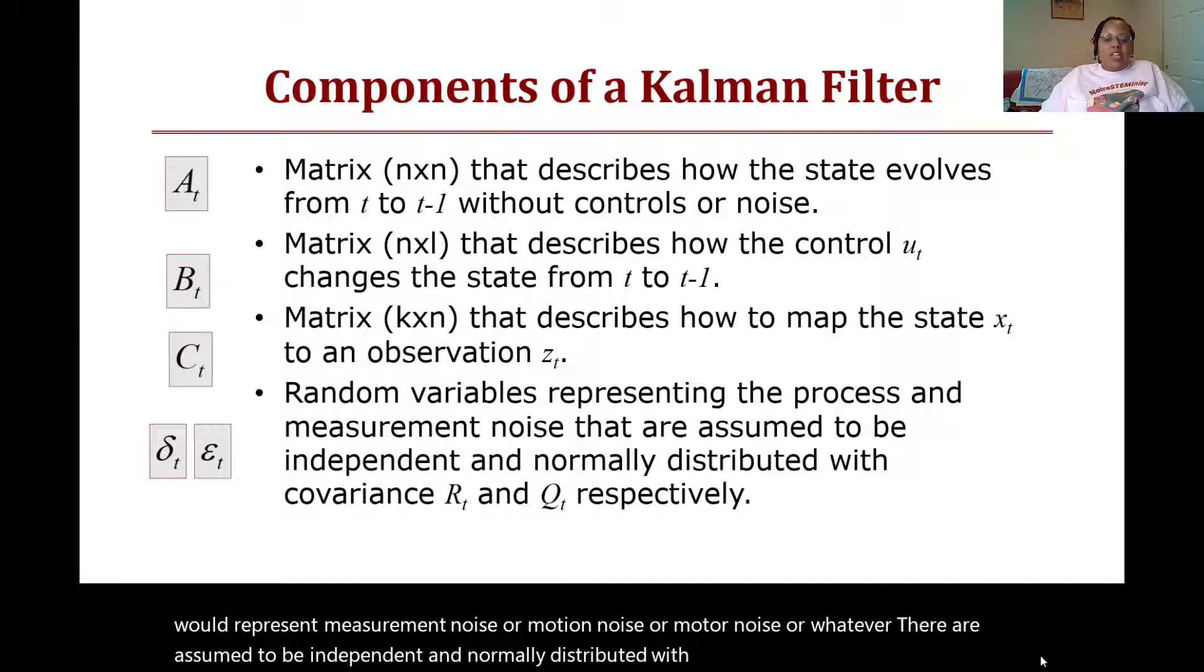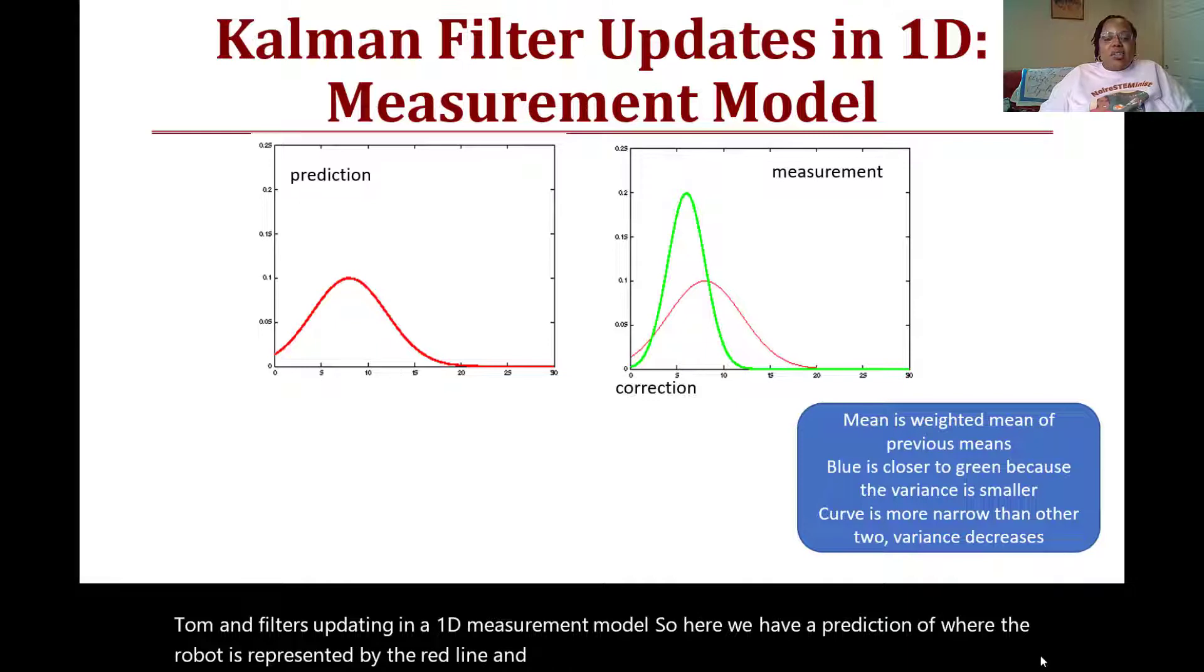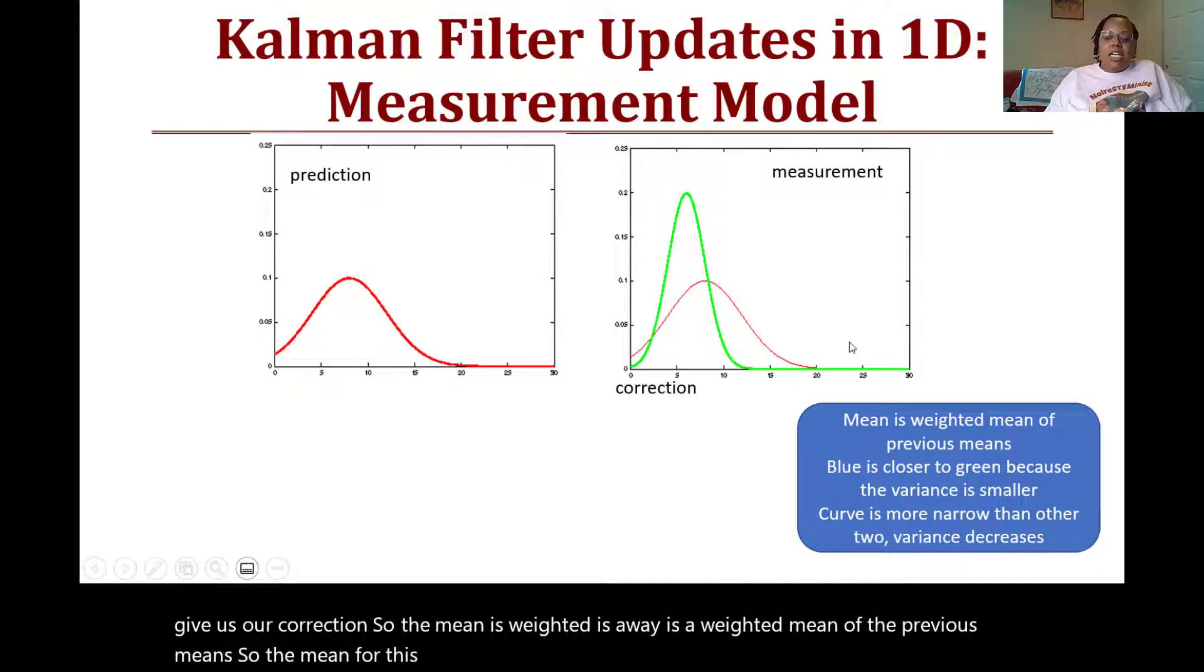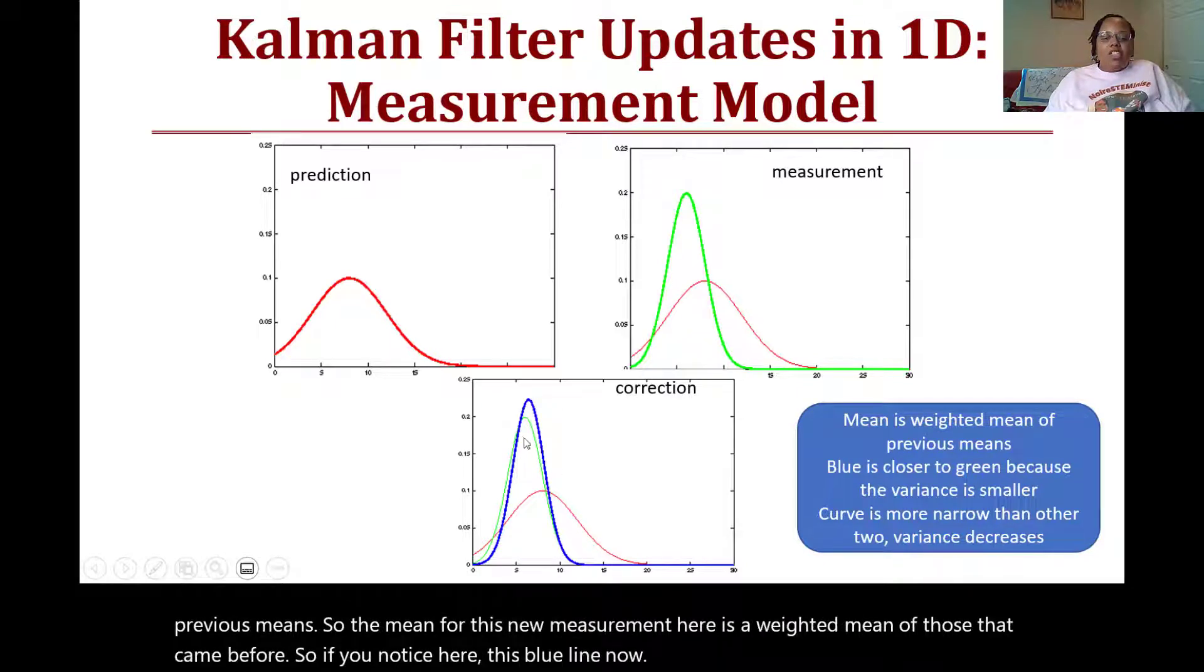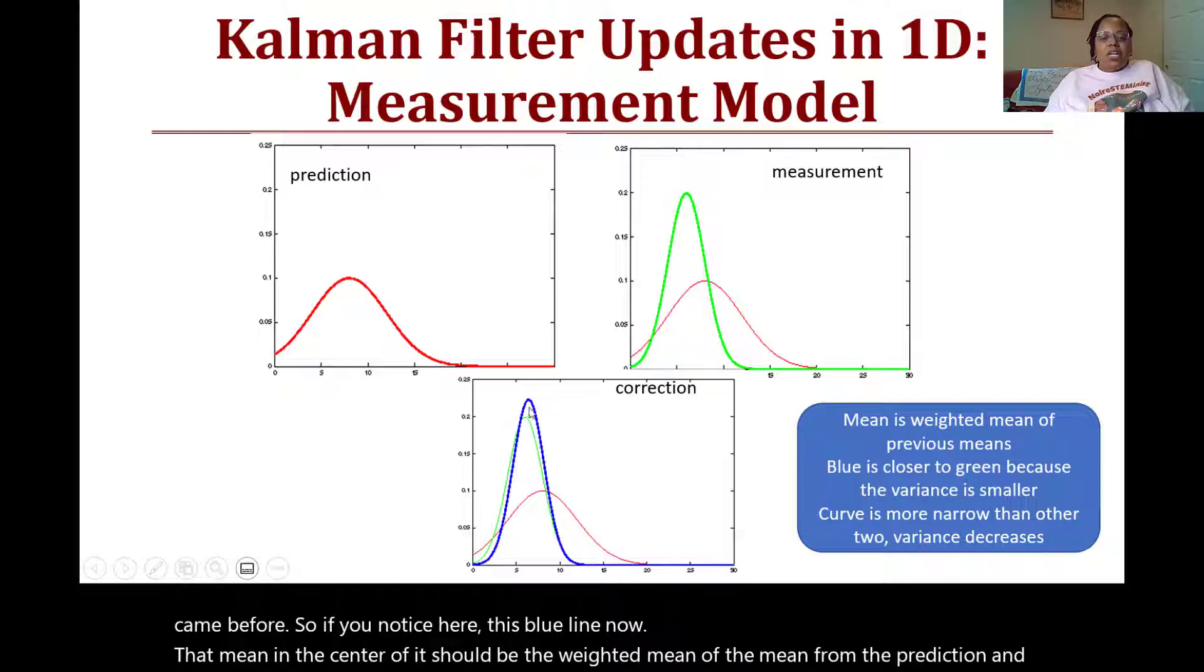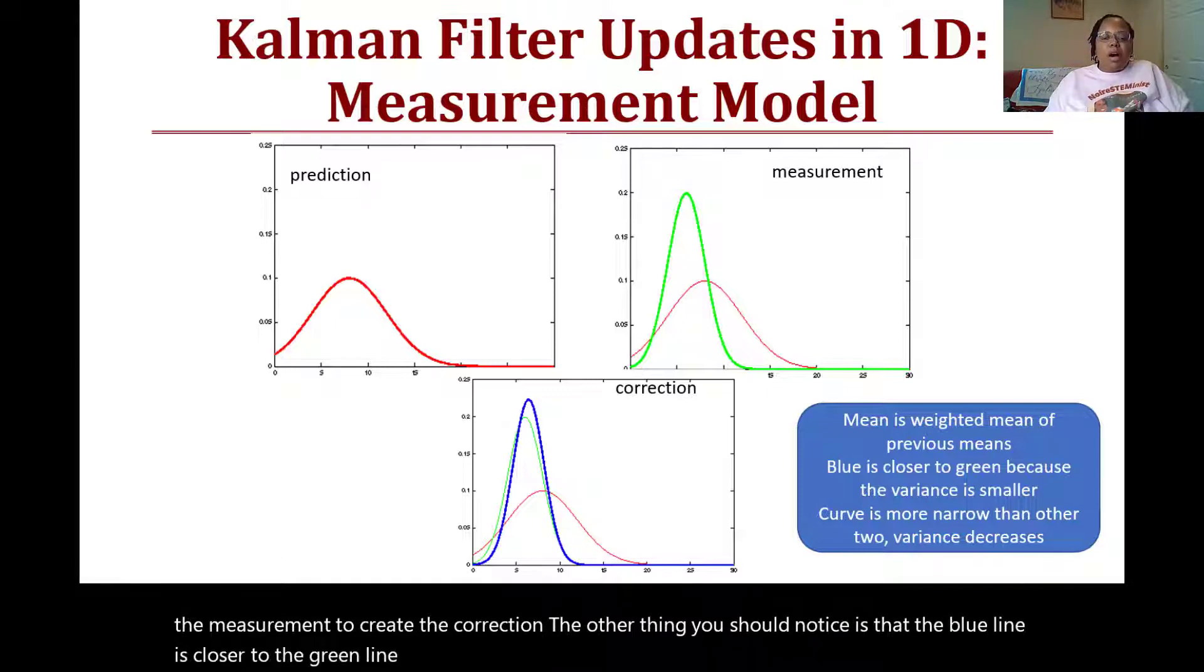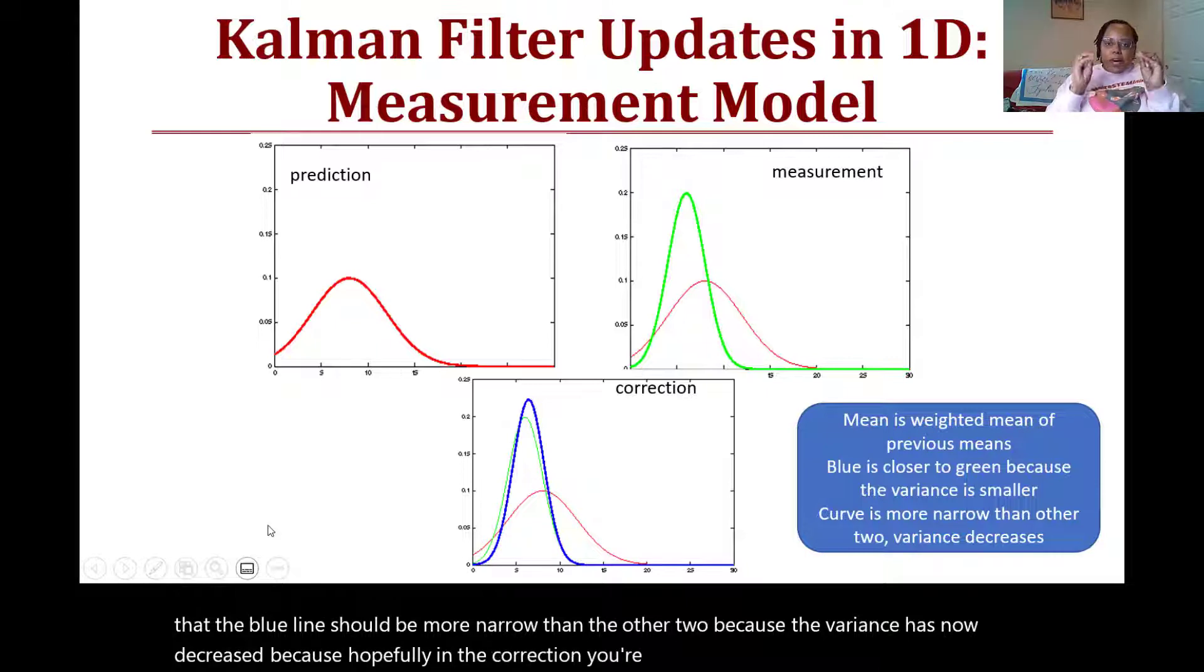Kalman filter updates in a 1D measurement model: Here we have a prediction of where the robot is represented by the red line, and then the measurement represented here which would give us our correction. The mean is a weighted mean of the previous means, so the mean for this new measurement here is a weighted mean of those that came before. If you notice here, this blue line now, that mean in the center of it should be the weighted mean of the mean from the prediction and the measurement to create the correction. The other thing you should notice is that the blue line is closer to the green line because the variance was smaller for the green line. Also notice that the blue line should be more narrow than the other two because the variance has now decreased, because hopefully in the correction you're becoming closer to the posterior belief of where the robot is.